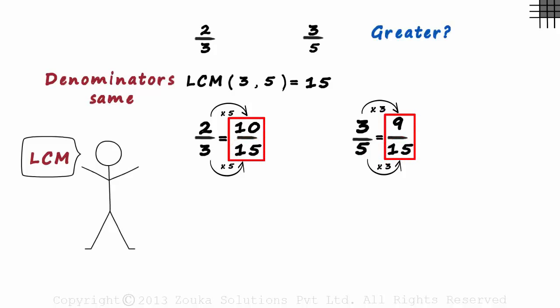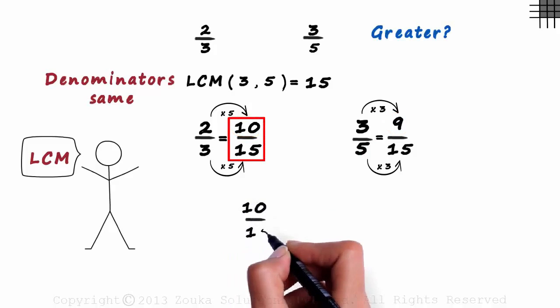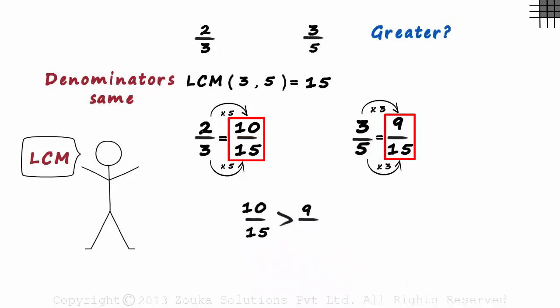These two fractions are actually like fractions. Remember, we haven't changed the value of any of the fractions. We have just written it differently. And to compare like fractions, we just compare the numerators. Since 10 is greater than 9, we can say that 10 by 15 is greater than 9 by 15.